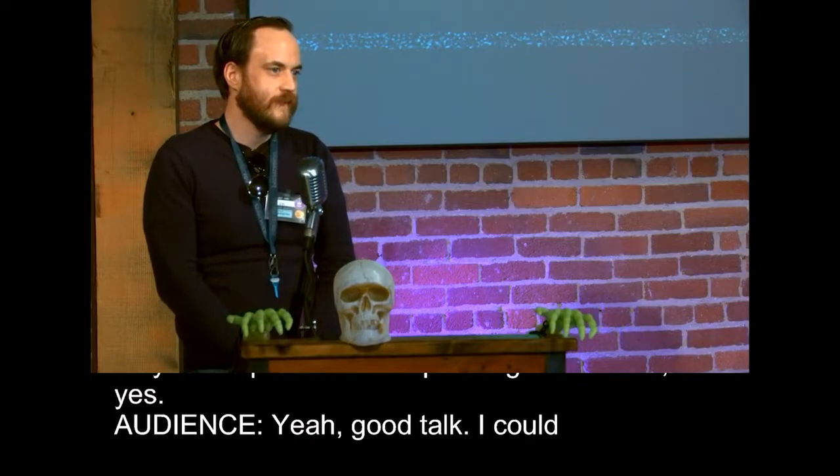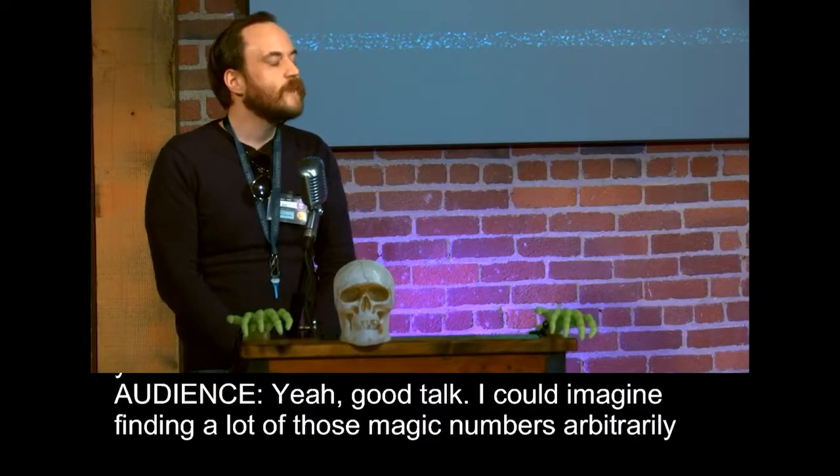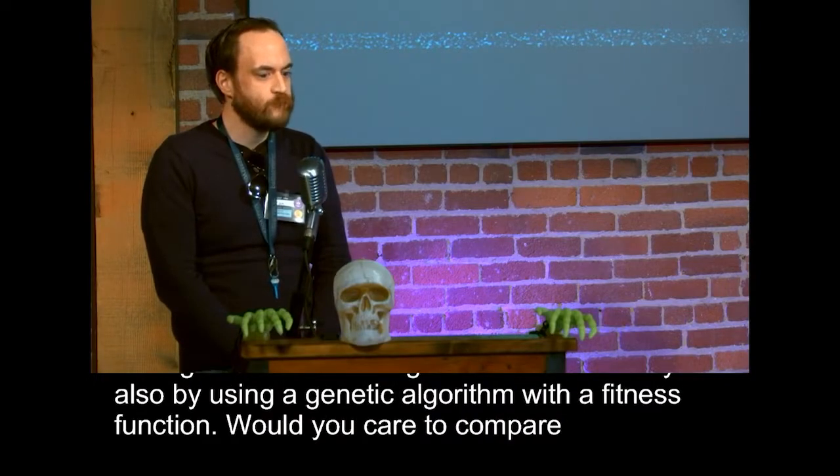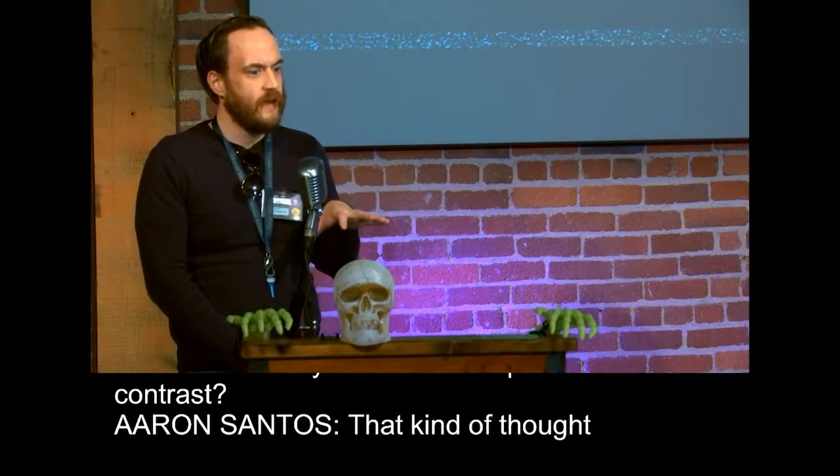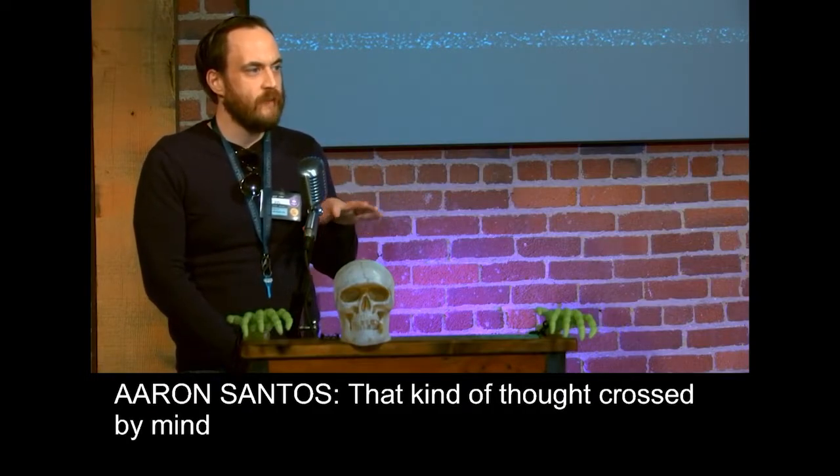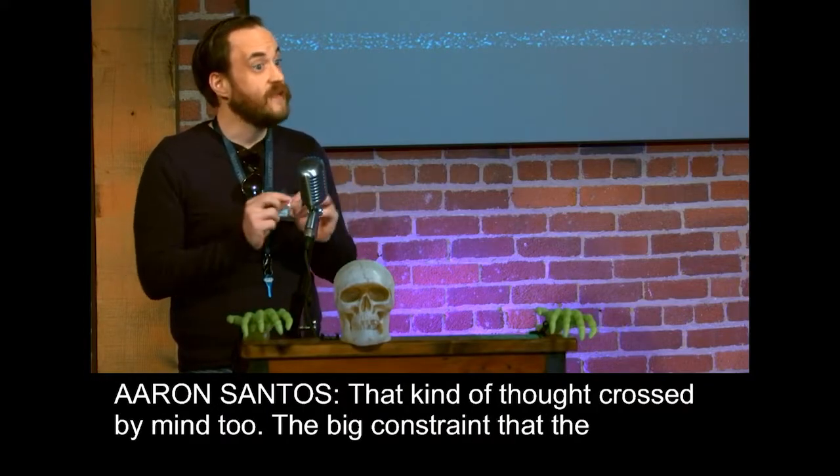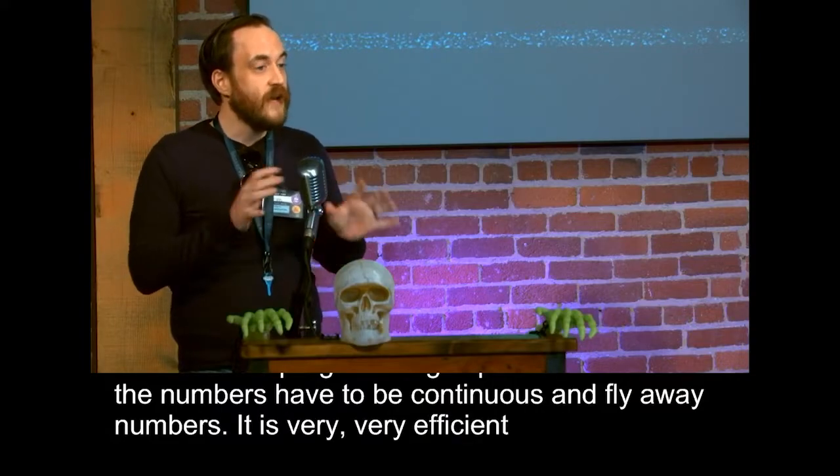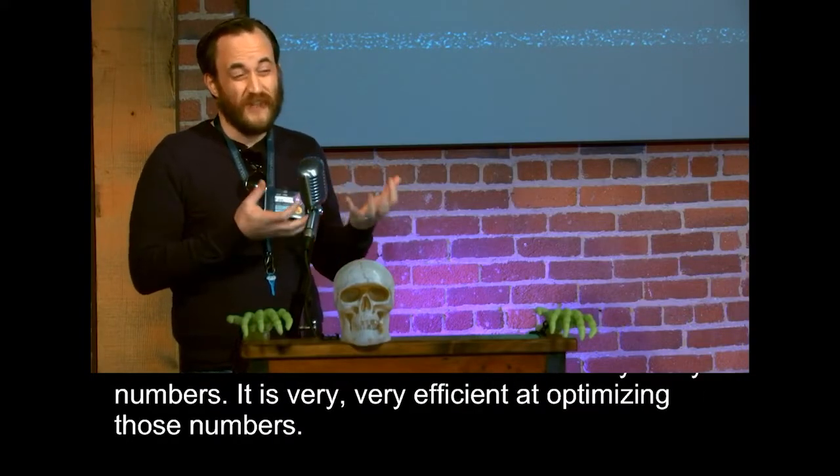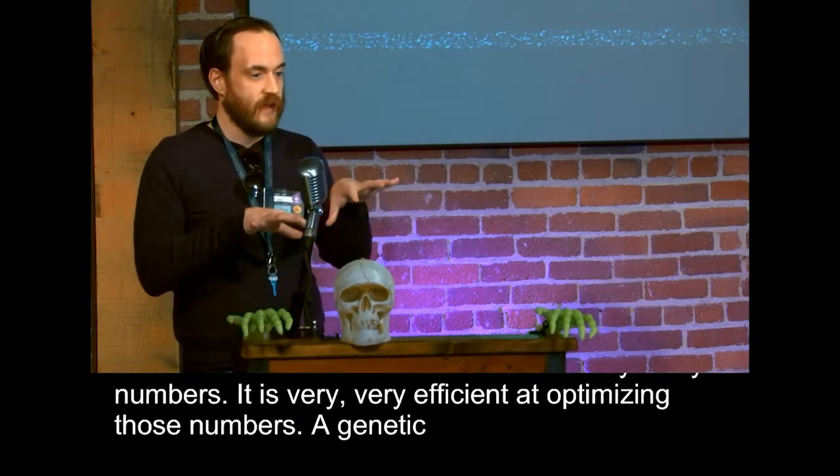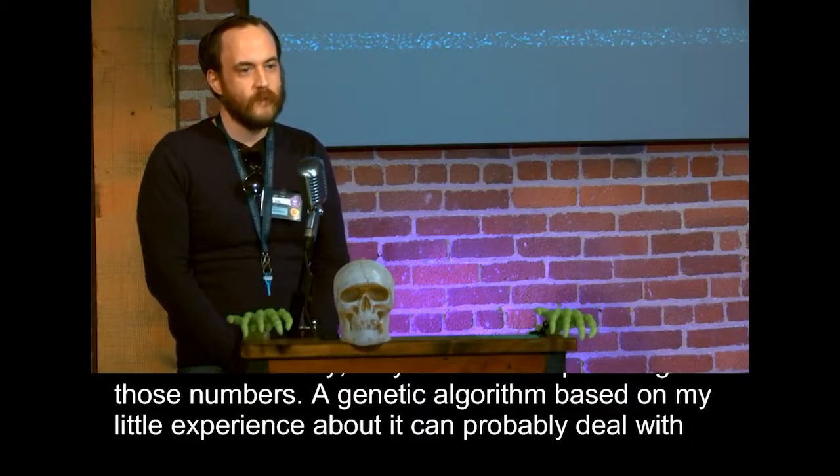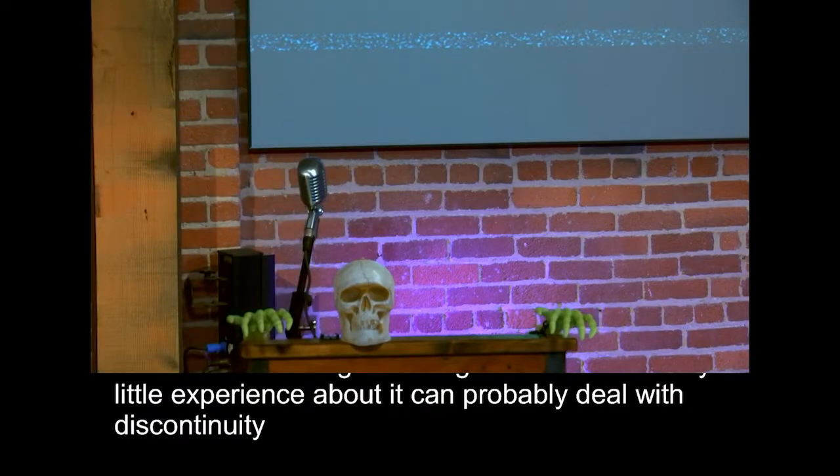Good talk. I could imagine finding a lot of those magic numbers arbitrarily also by using a genetic algorithm with a fitness function. Would you care to maybe compare and contrast? Yeah. That thought crossed my mind, too. The big constraint that differentiable programming imposes is that all the numbers have to be continuous. So they all pretty much have to be floating-point numbers. But it's very efficient at optimizing those numbers. A genetic algorithm, based on my little experience about it, can probably deal with discontinuities a little bit better. But it might take a little bit more time to optimize those. Good question. Cool. Thank you so much. Thank you.